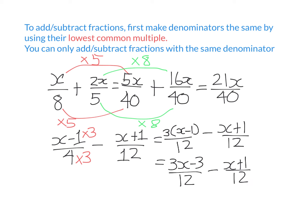Now I'm subtracting (x plus 1), but I'm subtracting the whole lot. Since the denominators are equal, I subtract the numerators: 3x minus x is 2x, and negative 3 subtract 1 is negative 4. The denominator stays as 12 — you always keep the same denominator when adding or subtracting fractions. So the result is (2x minus 4) over 12, which could be simplified further, but we'll move on to linear equations.